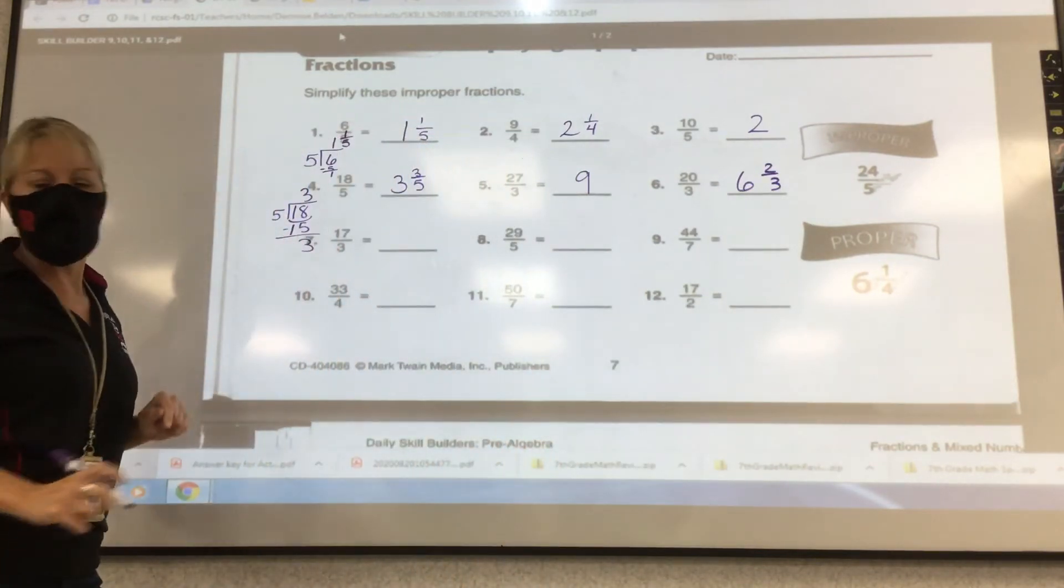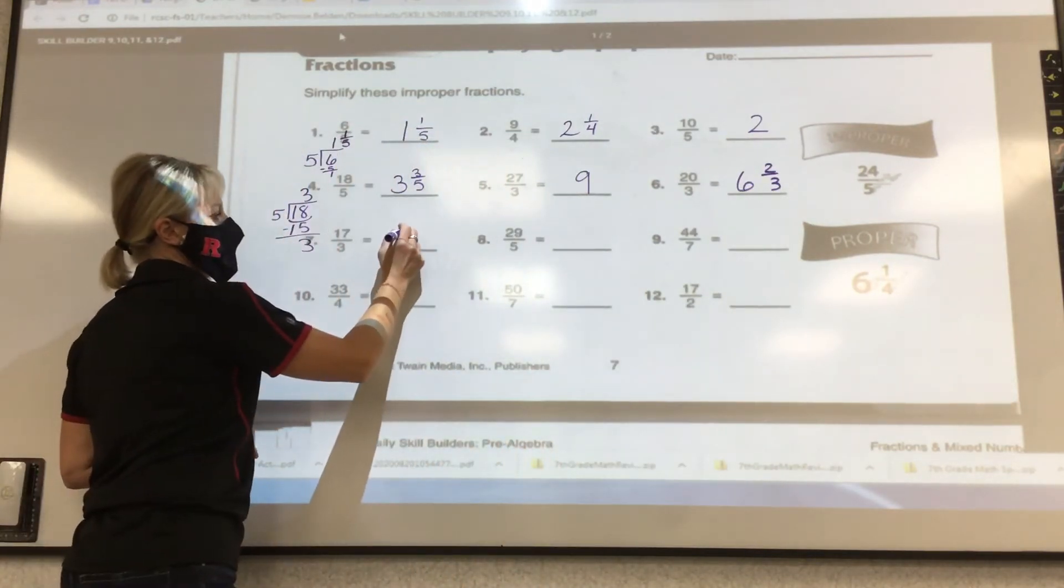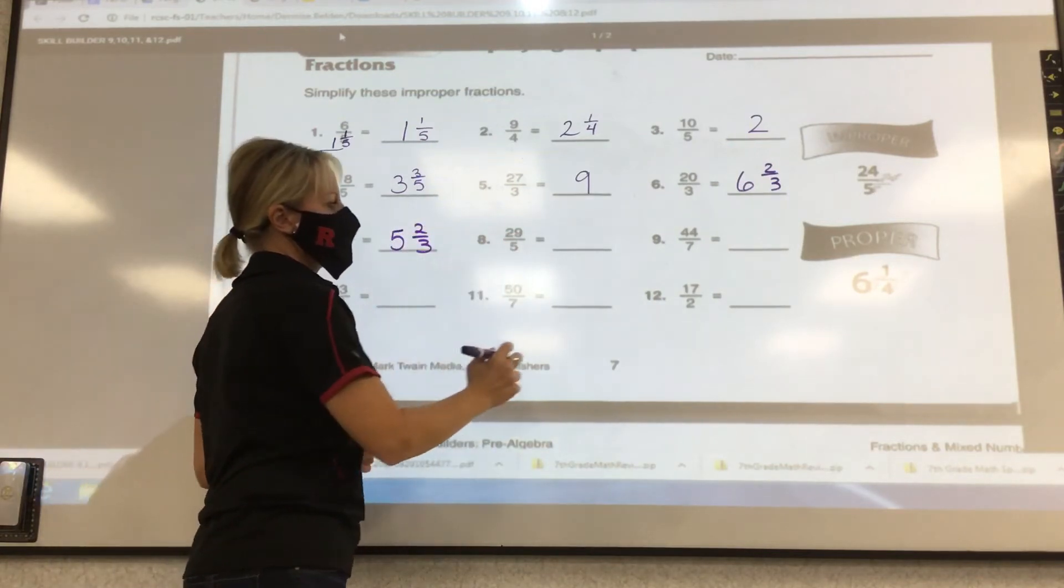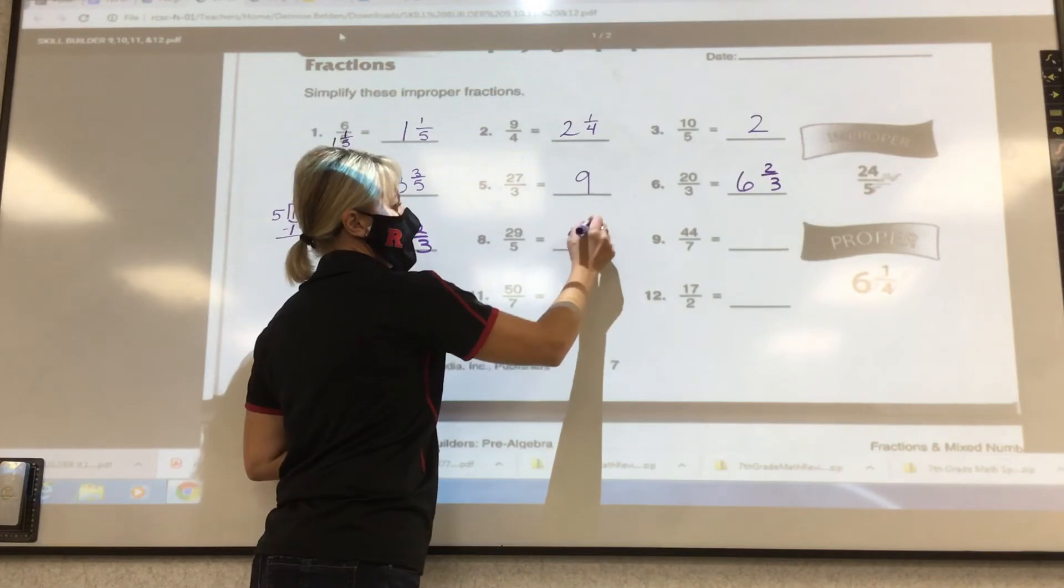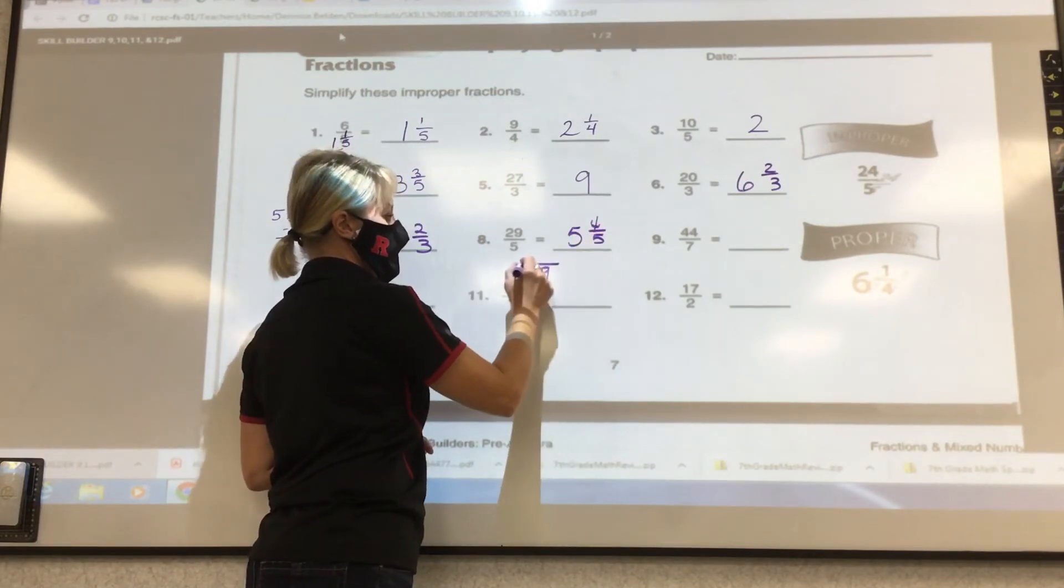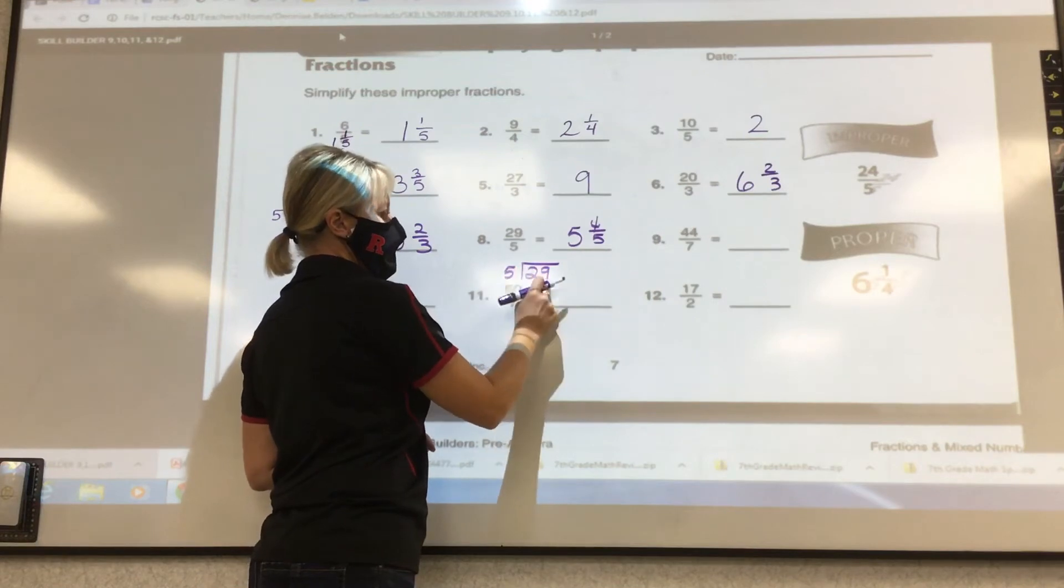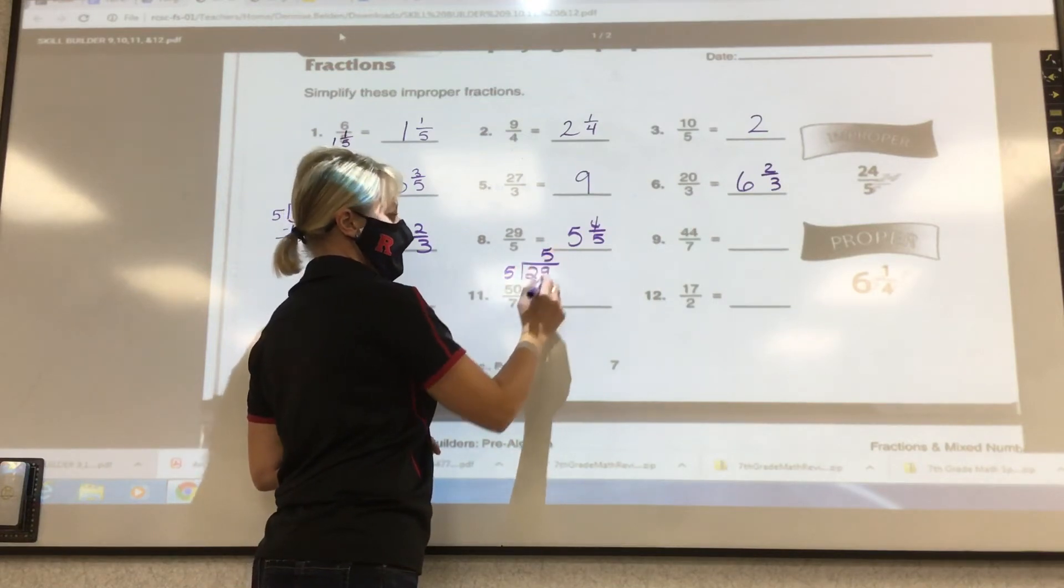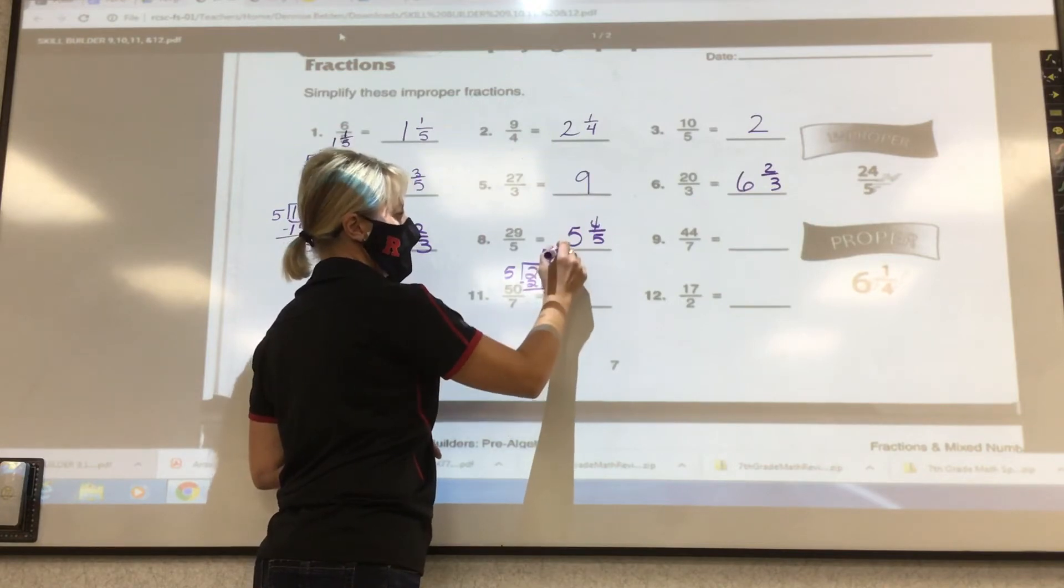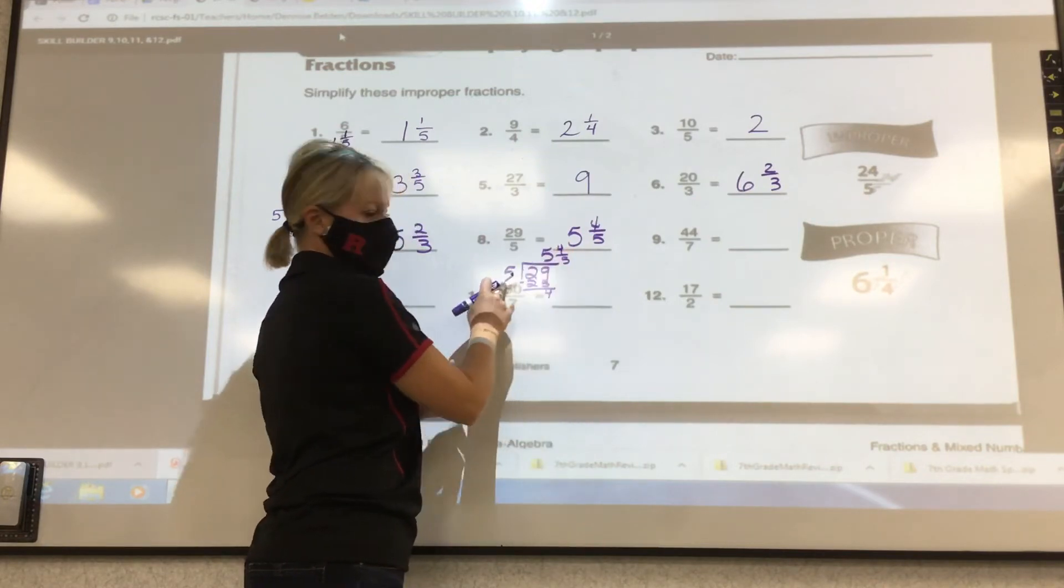27/3 is what? 9. 20/3 is what? 6 and what? 2/3. Because 6 times 3 is 18. 20 minus 18 is 2. So it would be 2/3. 17/3 is what? 5 and 2/3. 29/5. 5 and 4/5. Just another example for some of you that might need it. 29 divided by 5. 5 goes into 29 five times. 5 times 5 is 25. 4 left. So it becomes 4 over whatever you divide by.